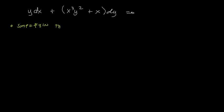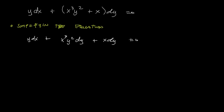Simplifying the equation, we multiply dy into the terms: y dx + x³y² dy + x dy = 0. Sometimes simplification is needed before we can directly identify exact differentials — it depends on the problem, so there's no specific formula for this part. After simplifying, we call this Equation 1 and the expanded form Equation 2.